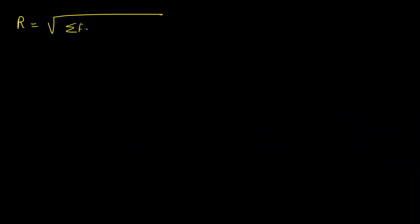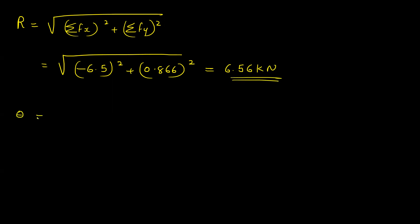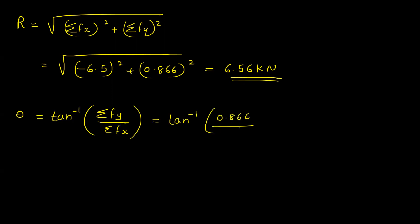Then R is equal to the square root of the sum of Fx squared plus the sum of Fy squared, that is equal to the square root of (minus 6.5) squared plus (0.866) squared, which equals 6.56 kilo Newton. The direction theta equals tan inverse of Fy by Fx, which is tan inverse of 0.866 by 6.5, equal to 7.59 degrees.